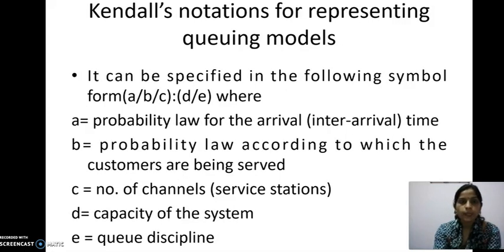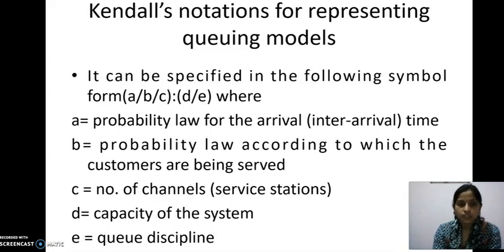Next: Kendall's notation for representing queuing models. It can be specified in the following symbol form: a/b/c:d/e. Here, 'a' means the probability law for the inter-arrival time; 'b' means the probability law according to which the customer is served, such as FCFS, LCFS, priority order, or random order; 'c' is the number of channels, whether single or multi-channel; 'd' is the capacity of the system, finite or infinite; and 'e' is the queue discipline.